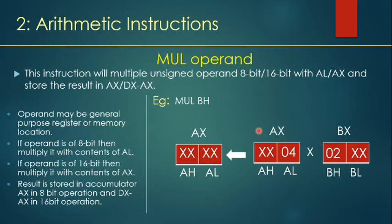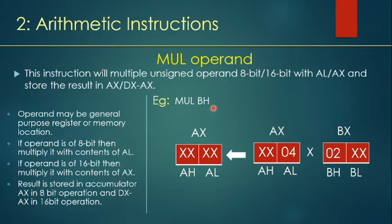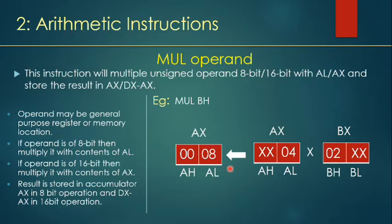The MUL (multiply) operand is very powerful. One operand must be in the accumulator and the other is given with the instruction. For example, MUL BH multiplies BH (the higher byte of BX register, an 8-bit register) by AL (an 8-bit accumulator). An 8-bit multiplication gives a 16-bit result stored in AX, for example 0008. A 16-bit multiplication gives a 32-bit result, requiring both AX and DX registers to accommodate the result in the 8086.